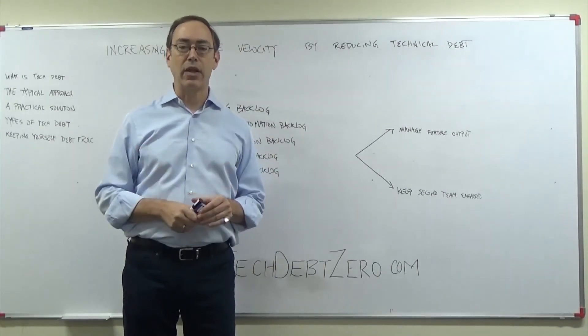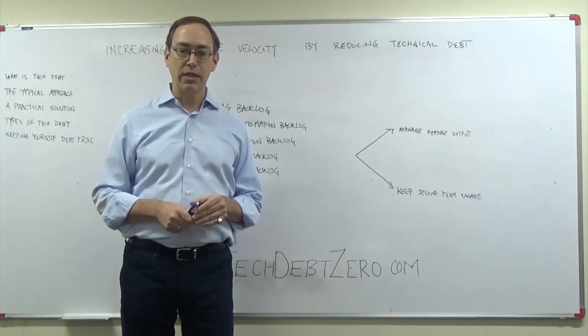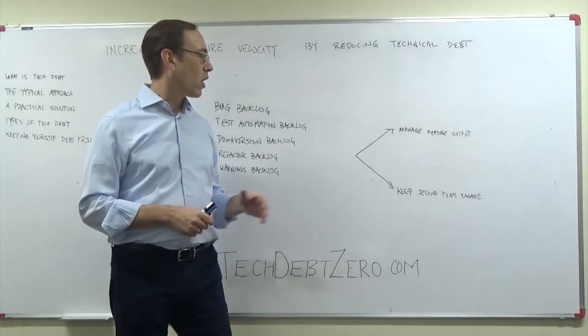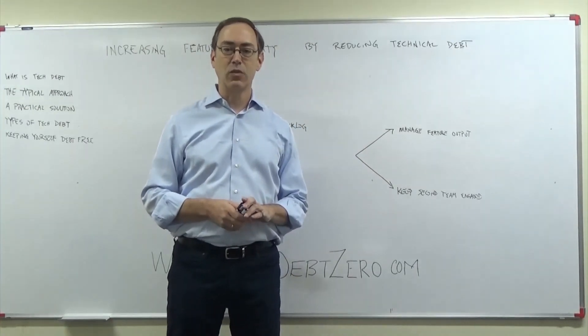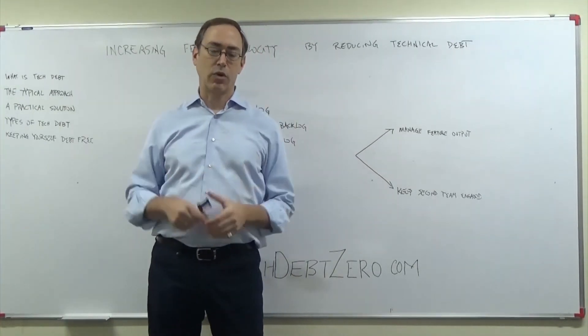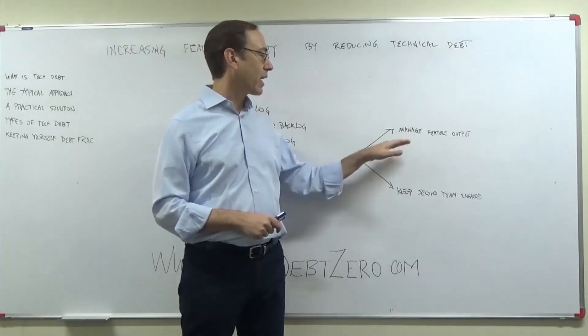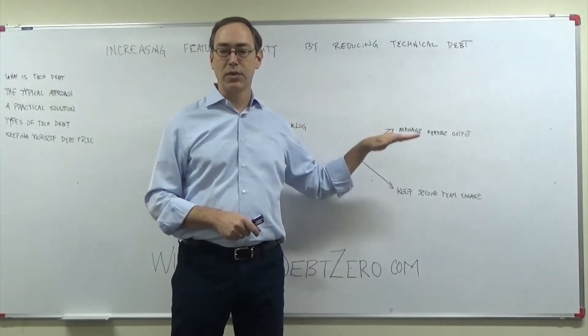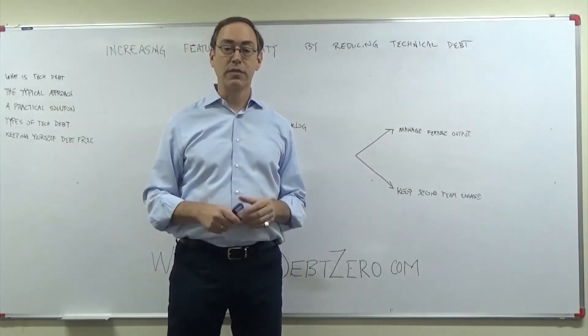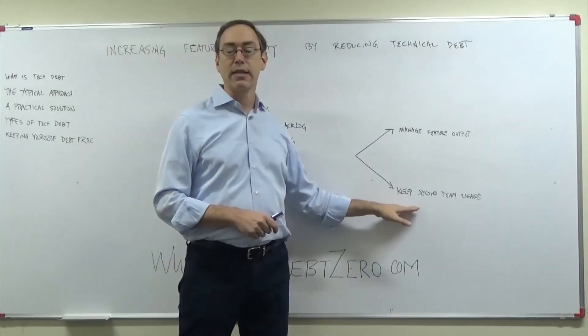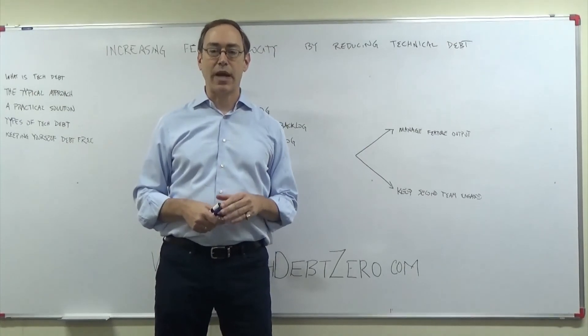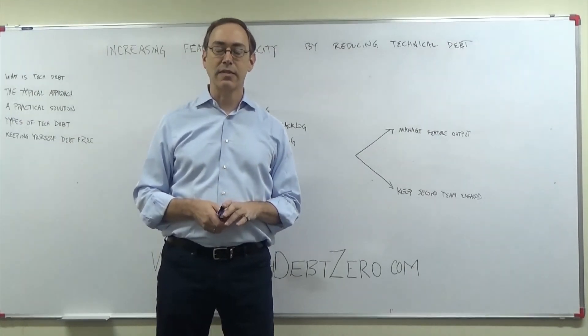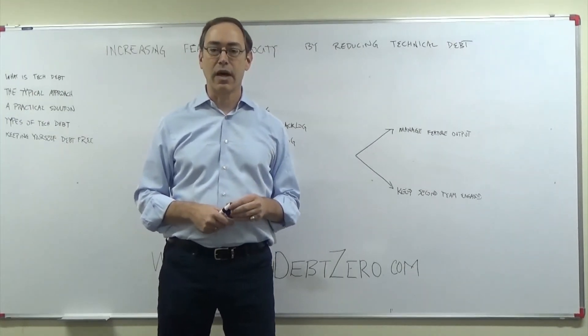Once you've used this extra capacity to get caught up on your tech debt backlog in many areas, of course you want to keep up and not fall into a debt situation again. You really have two choices there. One is oftentimes the pain of falling into a low velocity situation will allow you to explain more effectively to management why you should manage your feature output to your natural capacity. The other choice, of course, is you can keep the second team engaged over time as an assistant to you to manage some of your engineering tasks and allow velocity to continue at a higher rate.